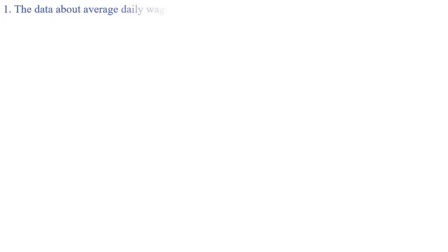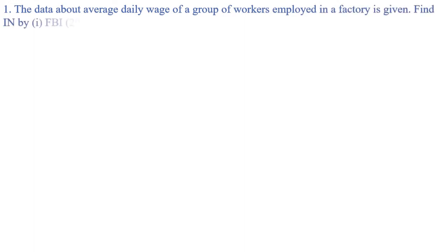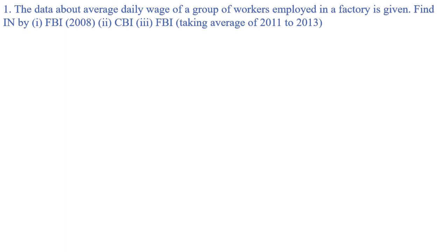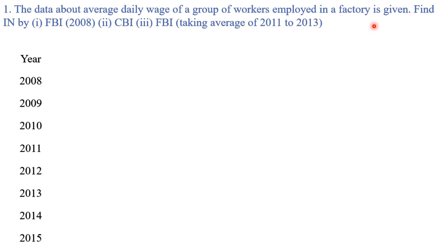In this tutorial I'm going to solve some sums based on those concepts from Exercise 1.1. There are only four questions in this exercise but they cover all the concepts from the previous tutorial. Let's start with question number one: the data about average daily wage of a group of workers employed in a factory is given. The years are 2008 to 2015 with the corresponding average daily wage values in rupees.